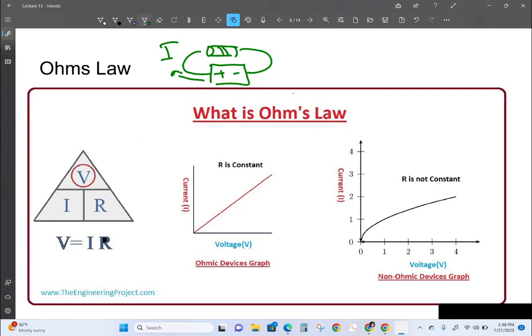If I provide 6 volts to it and 2 amps flows, and if I provide 12 volts to it and 4 amps flow, and if I provide 18 volts and 6 amps flow in that device, then this is an ohmic device. That means there's a direct relationship between the current and the applied voltage.